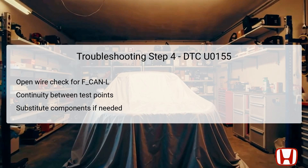Following the continuity test for the F-CAN H line, conduct a similar test for the F-CAN L line. Again, ensure the ignition switch is in the lock position and connectors for the ECM and gauge control module are disconnected. Check continuity between ECM connector A at pin number 4 and the gauge control module connector at pin number 20. If continuity is found in the F-CAN L line, the wiring is functional, so substitute the gauge control module with a known good unit. If DTC U0155 is no longer indicated after substitution, the original gauge control module was faulty and replacement is required.